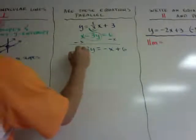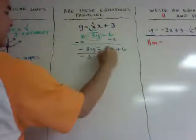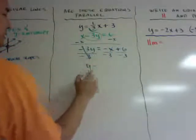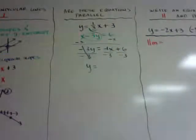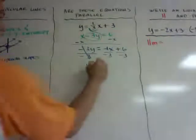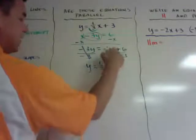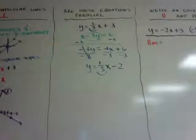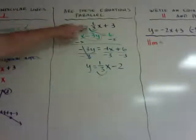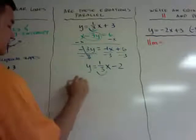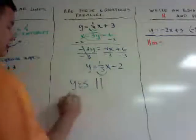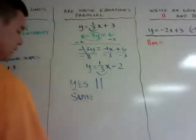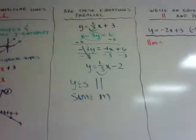Next, I divide each term by negative 3. That cancels out, so I get y equals — there's an invisible 1 — so negative 1 divided by negative 3 is 1 third x. And 6 divided by negative 3 is minus 2. My new slope is 1 third for the second equation. The first slope was also 1 third. Therefore, yes, they are parallel because they have the same slope.